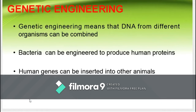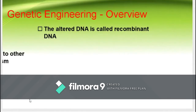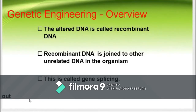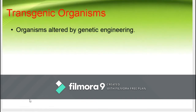For example, bacteria can be engineered to produce human proteins or human genes, as mentioned earlier, can be inserted into other animals. The altered DNA is called recombinant DNA, and the recombinant DNA is joined to other unrelated DNA in the organism. The DNA of one organism can be inserted into other organisms, or genes can be combined. This is done through gene slicing, where tiny fragments or segments of a DNA are taken out and replaced by different genes. The organisms whose genomes or genetic makeup are altered by the process of genetic engineering are called transgenic organisms.